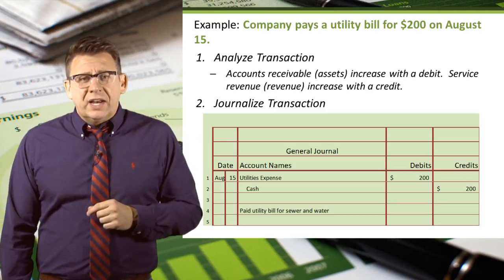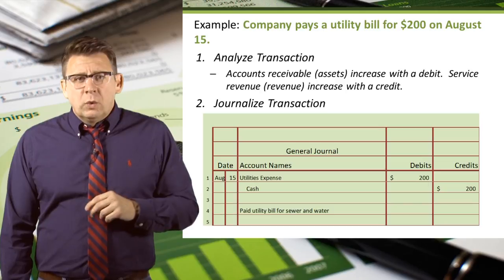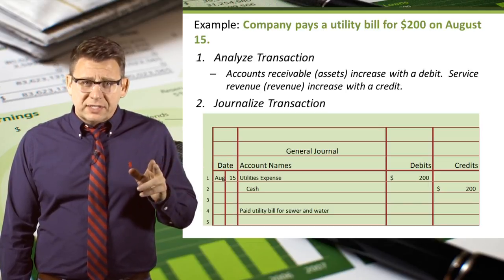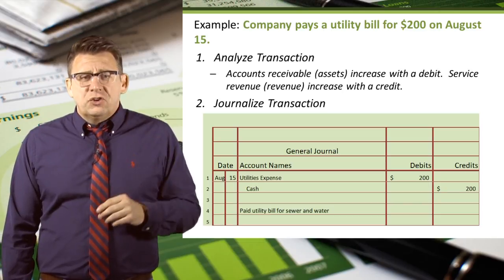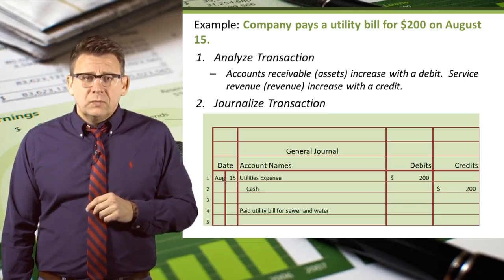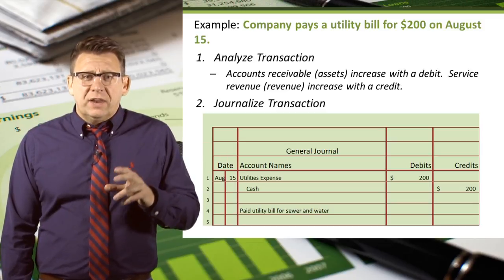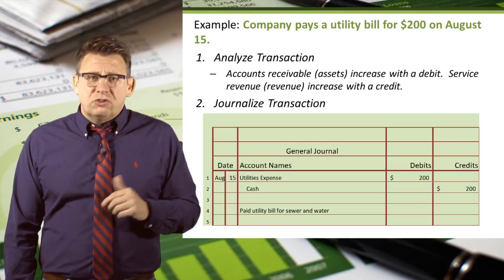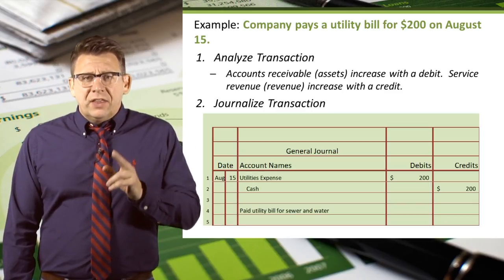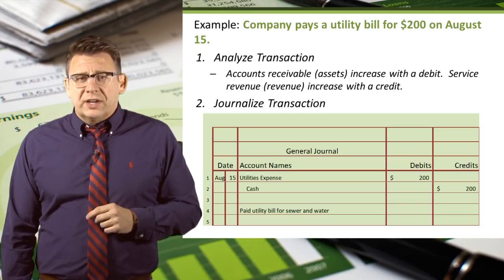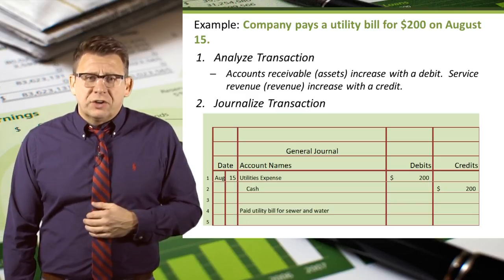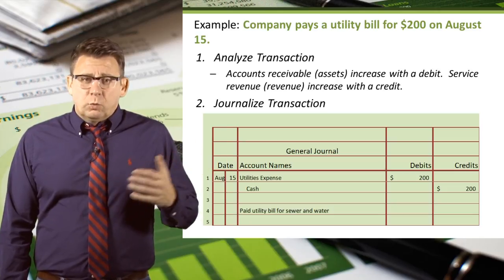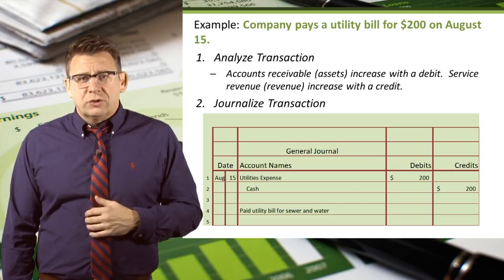So we'll enter the date, August 15th. We will then list the debit account first, so we enter utilities expense and then $200 in the debit column. Next we enter cash as the credit account — we'll want to indent cash, as you can see here — and then $200 in the credit column. Finally we would enter a description for this transaction, and we've now entered this transaction into the general journal.